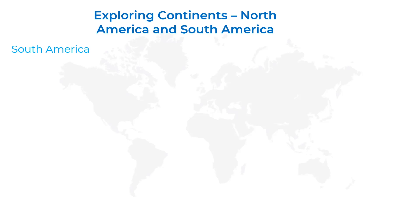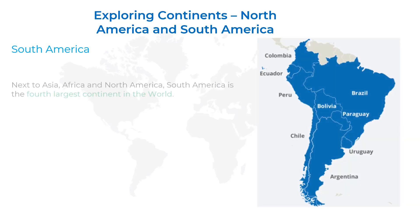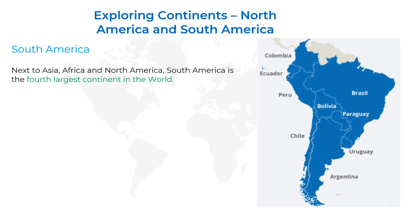The first point is: next to Asia, Africa, and North America, South America is the fourth largest continent in the world. The first largest continent is Asia, the second largest is Africa, the third largest is North America, and the fourth largest continent is South America.